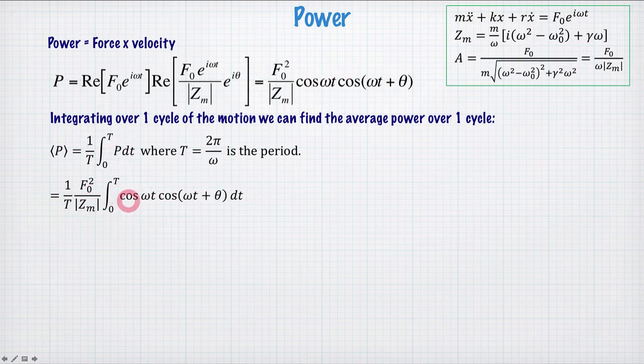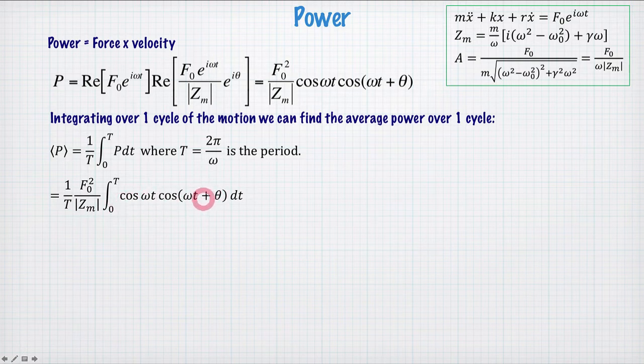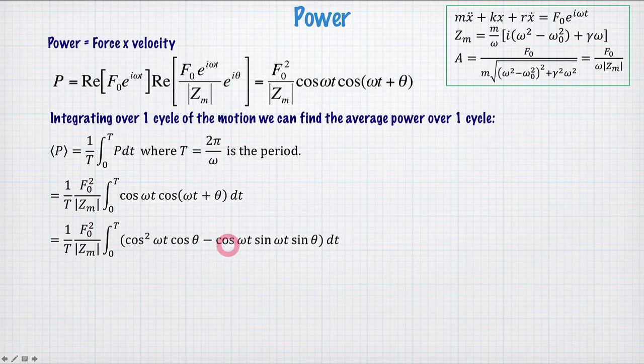Expand them a little, and we find one part here will integrate to zero, because the integral over one period of cos(ωt) times sin(ωt) will be zero. The integral of cos²(ωt), however, is not zero, it has a positive area.